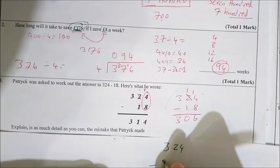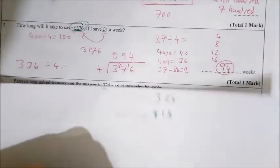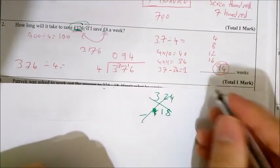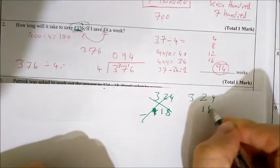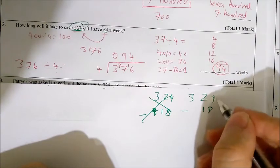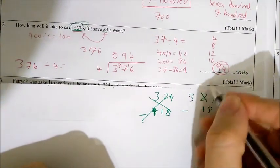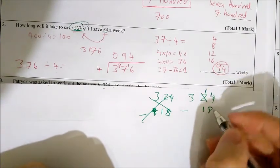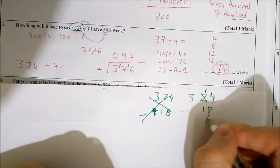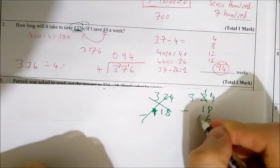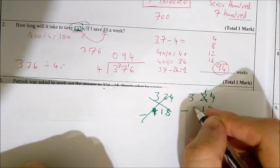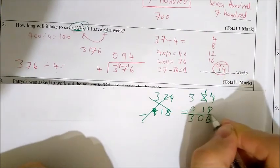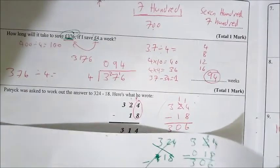324 take away 18. When you do it, just make sure you lay out your columns. So as you can see, the units are lined up. The tens are lined up. It's take away. The 4 is bigger than the 8. So I need to borrow from the tens column. So this is 1. And this one here is 1. So 14 take away 8 is 6. Then I've got 1 take away 1, which is 0. 3 take away 0 is 3. So my answer is 306. What did Patrick get? Patrick's got 314.